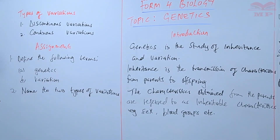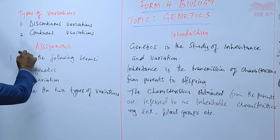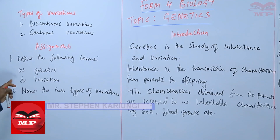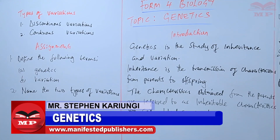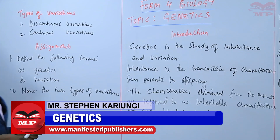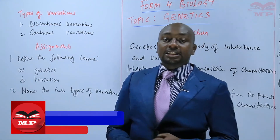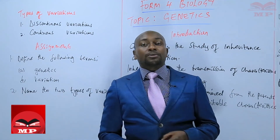We'll stop there for today. The assignment is: first, define the following terms — (a) genetics and (b) variation. Number two, name the two types of variations. Until next time, goodbye.